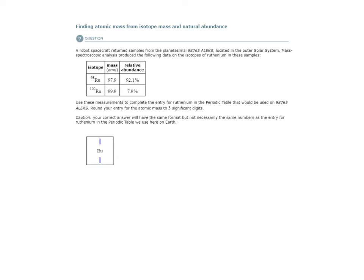Here's the second example of the topic: finding atomic mass from isotope mass and natural abundance.